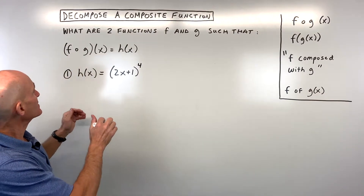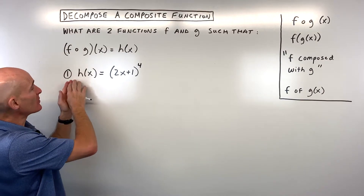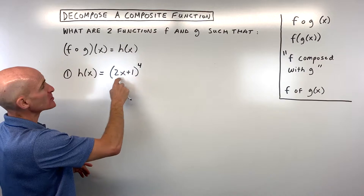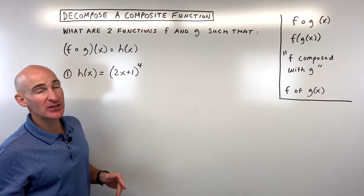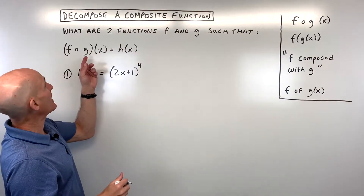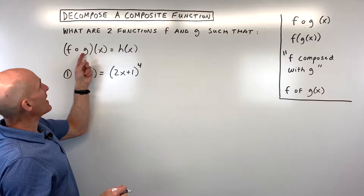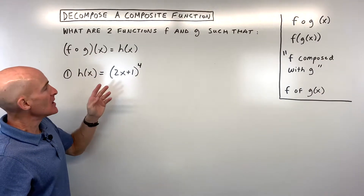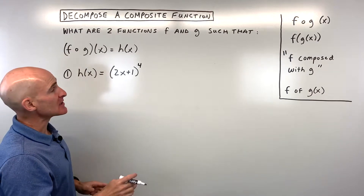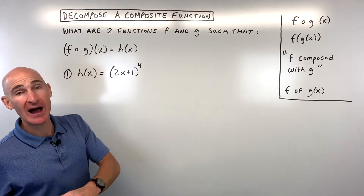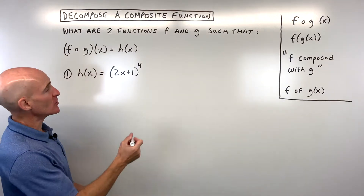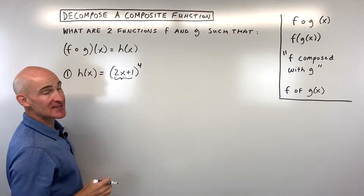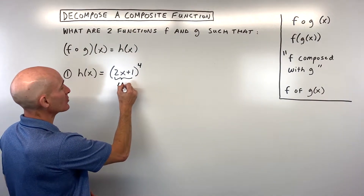Let's take a look at three examples. Starting with the first example: h of x is equal to 2x plus 1 to the fourth power. We're trying to find out what were the original functions f and g such that when they were composed, they gave us this. The way I like to think about it is: what's the inner function and what's the outer function? In this case, the inner function could be thought of as the whole quantity inside the parentheses.